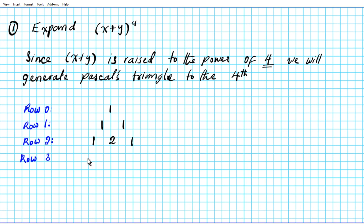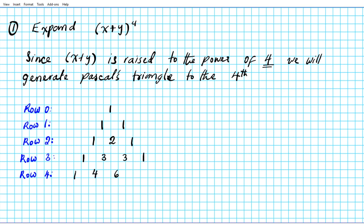We proceed to row three: we start with one, one plus two is three, two plus one is three, and we end with one. Row four, where we're stopping: put a one at the start, one plus three is four, three plus three is six, one plus three is four, and then a one at the end.